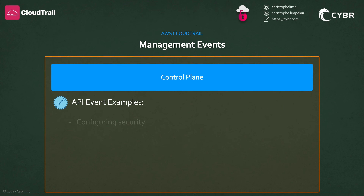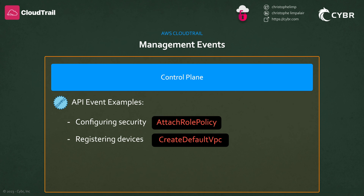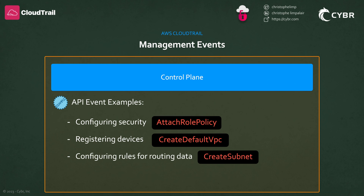As an example, launching an EC2 instance or creating an S3 bucket is an action in the control plane, and so that would be logged as part of management events in CloudTrail. Some other examples include configuring security using the IAM attachable policy API operation, registering devices like with Amazon EC2 using the create default VPC API operation, configuring rules for routing data — in Amazon EC2 this could be create subnet API operations — and setting up logging with the create trail API operation in AWS CloudTrail.